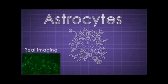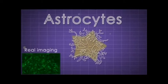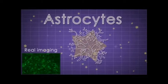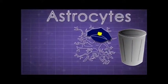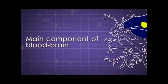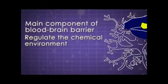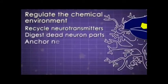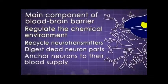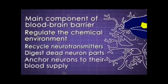Then, we also have astrocytes, which are a specific type of macroglia. They're called astrocytes because they sort of look like stars. Essentially, astrocytes act as the police and garbage men of the central nervous system. Not only are they a main component of the blood-brain barrier, but they also regulate the chemical environment, recycle neurotransmitters, digest dead neuron parts, and anchor neurons to their blood supply. Astrocytes are the most abundant of glial cells.